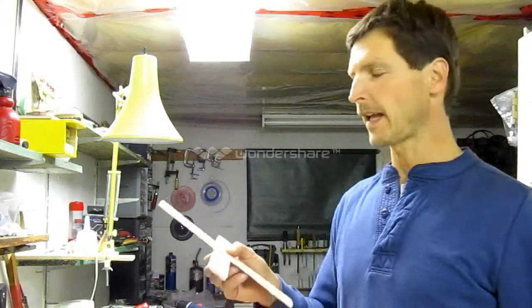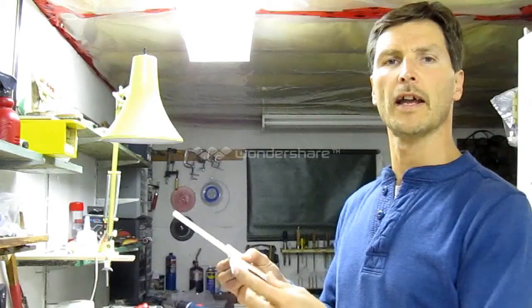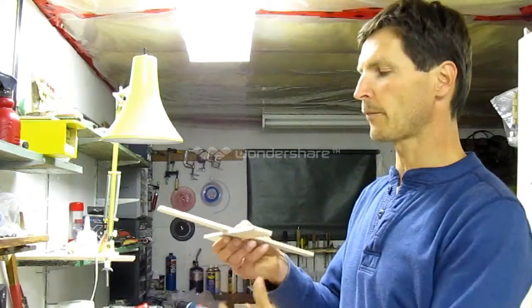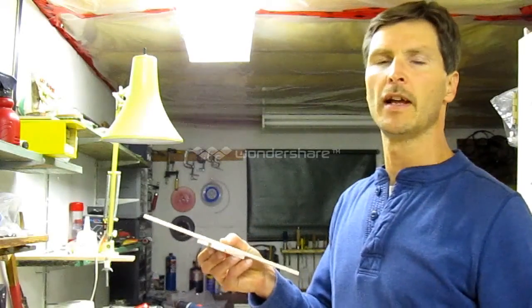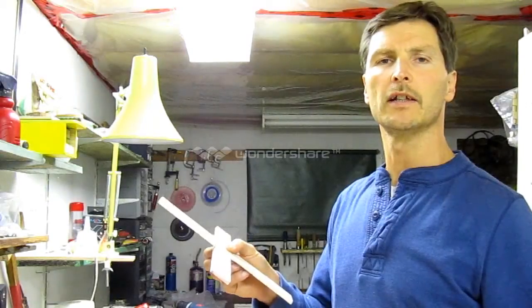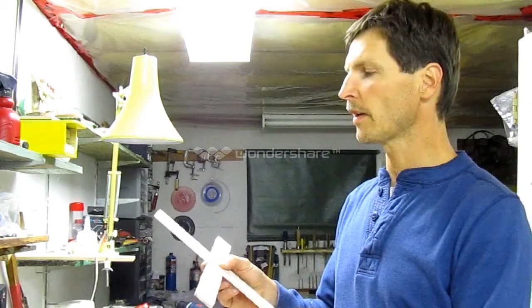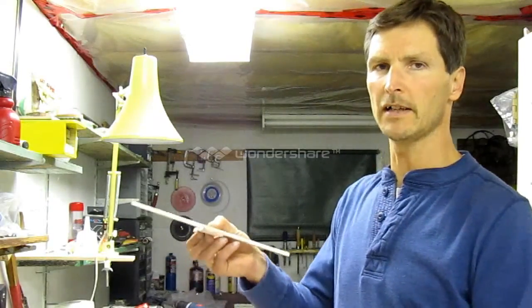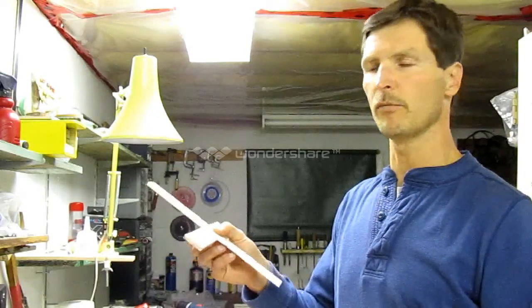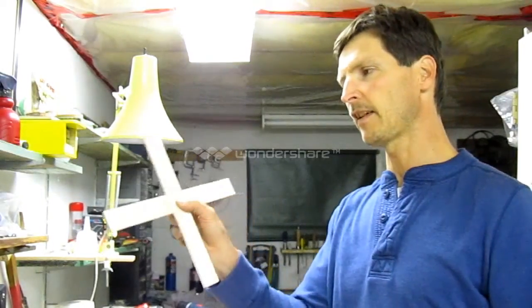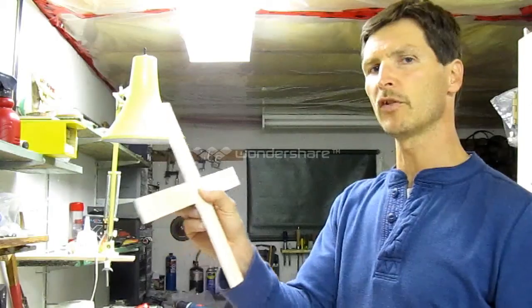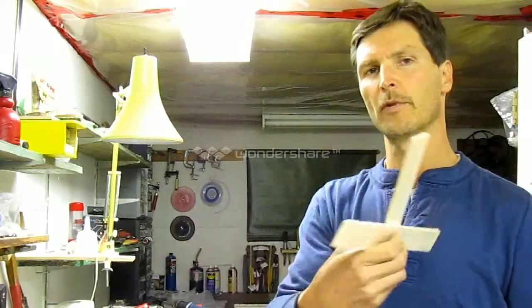This boomerang is basically a helicopter rotor without the helicopter hanging beneath. As with the helicopter rotor, the blade needs to be an airfoil shape to provide lift. Except in the case of a boomerang, the blade flies at a steep angle to provide sidewards movement which causes it to come around in a circle and come back to you. There's a little bit more going on and Hugh Hunt talks about that in his article.